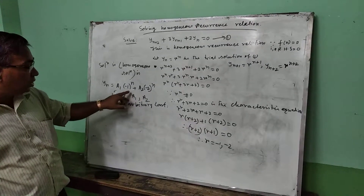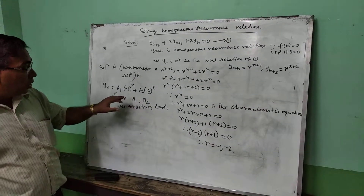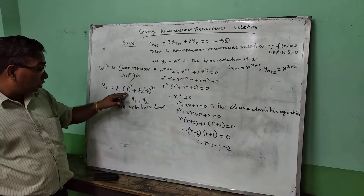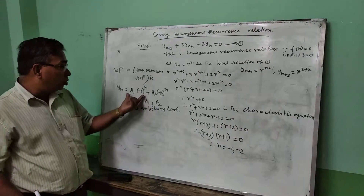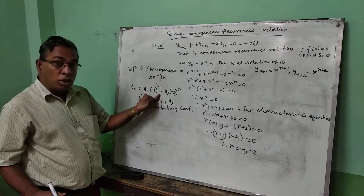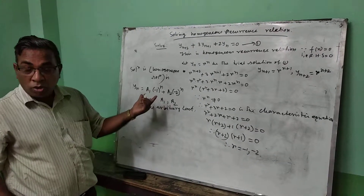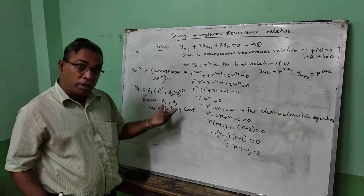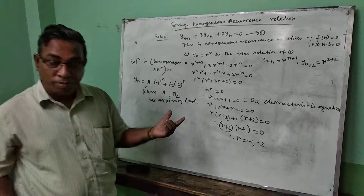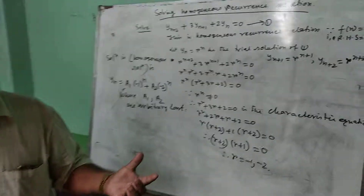We have discussed this part in my previous class — when roots are different, this is the assumed form; when roots are equal, we have already discussed that case. Thank you.